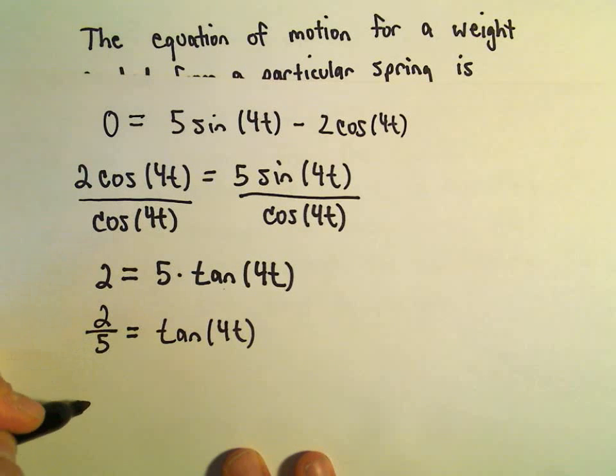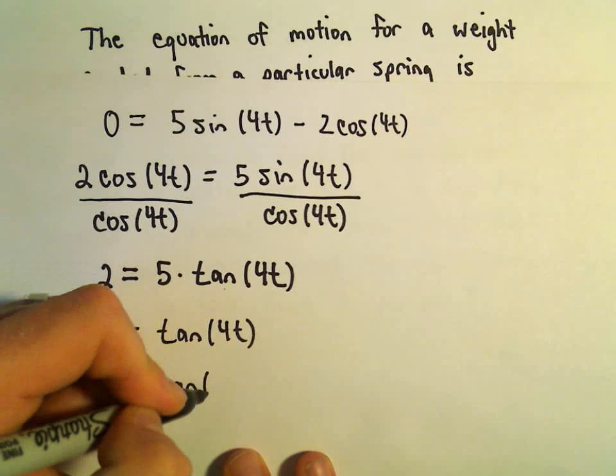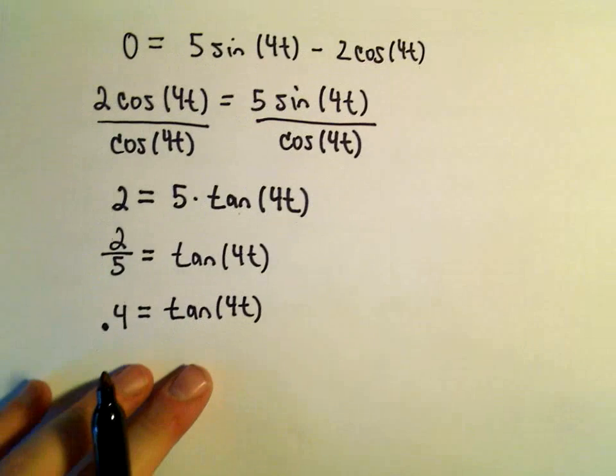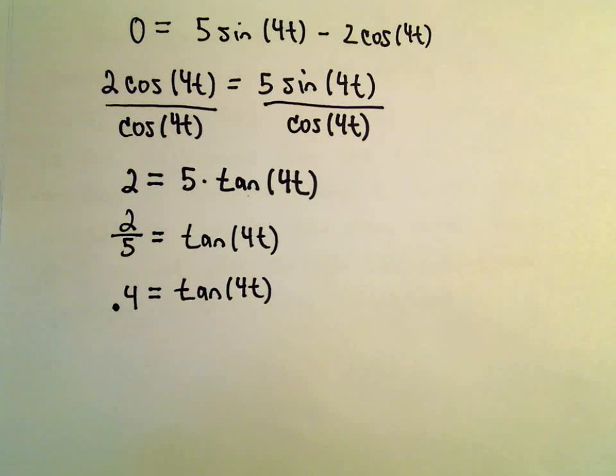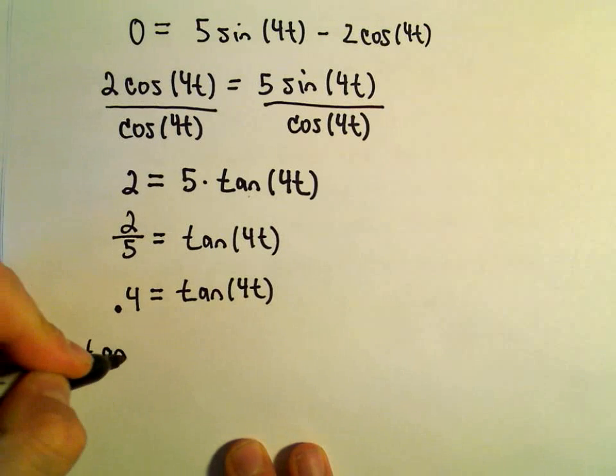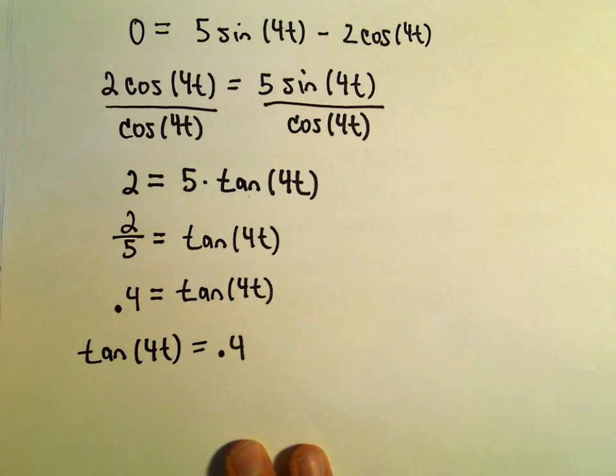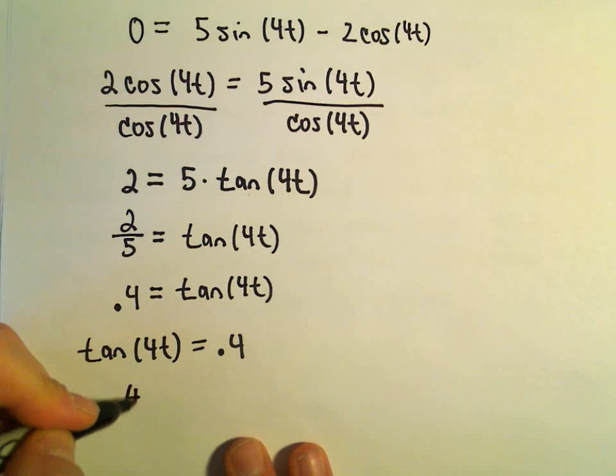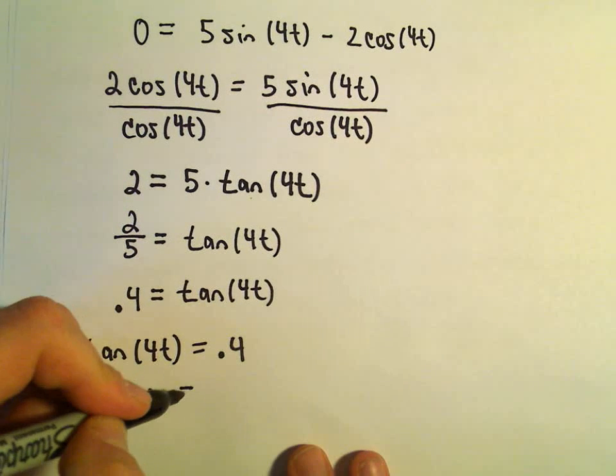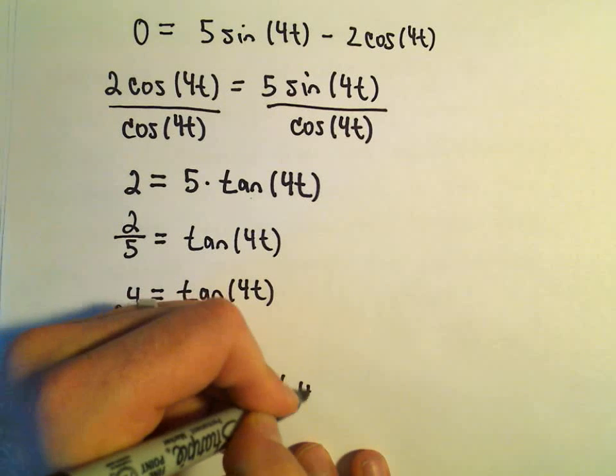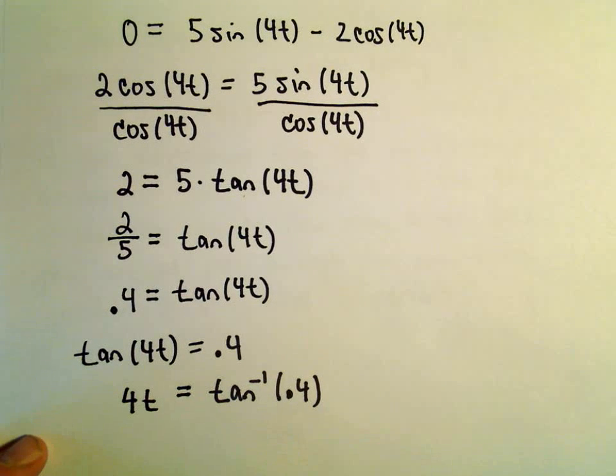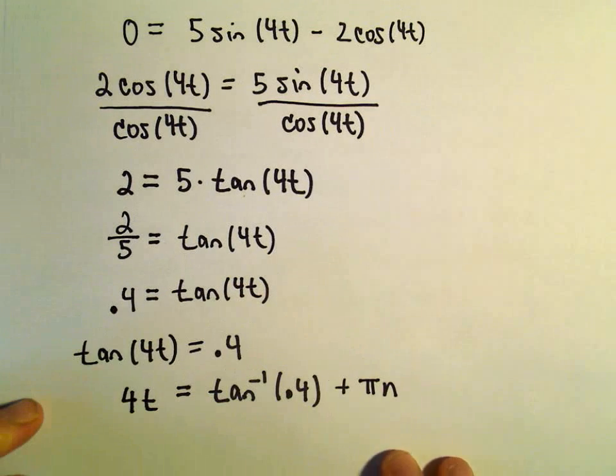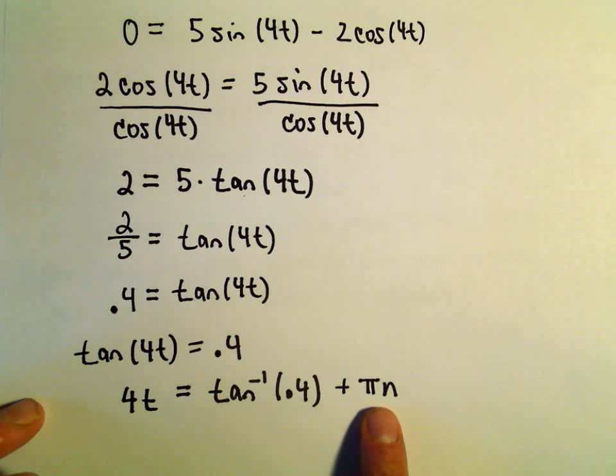So we'll get 2 over 5 is tangent of 4t, or equivalently, 2 over 5 is going to be 0.4 equals tangent of 4t. So what I'm going to do now is I'm going to take the inverse tangent of both sides. I'm going to rewrite it here again: tangent of 4t equals 0.4. So when we take the inverse tangent of both sides, on the left we'll just be left with 4t. On the right we'll get the inverse tangent of 0.4. But the problem is there are more solutions than just inverse tangent of 0.4. Recall that we can add multiples of pi for tangent to get additional solutions. So make sure don't forget to plug in the pi times n part.